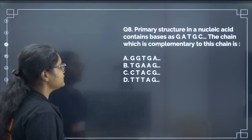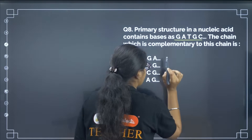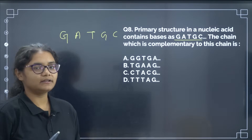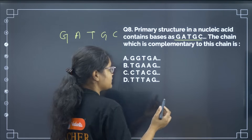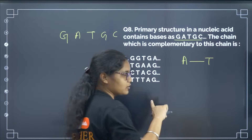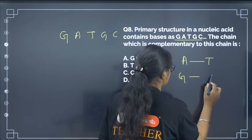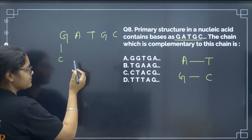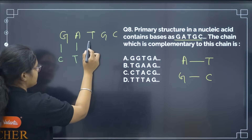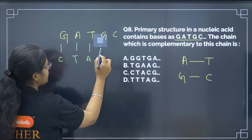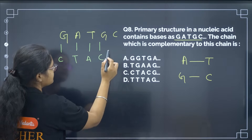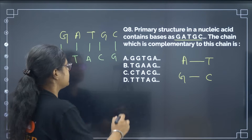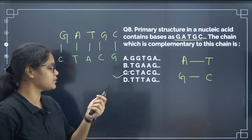The primary structure of a nucleic acid contains bases G, A, T, G, C. What is the complementary chain? In DNA, A always pairs with T and G always forms hydrogen bonds with C. So G gives C, A gives T, T gives A, G gives C, and C gives G — giving us C, T, A, C, G. The correct answer is option C.